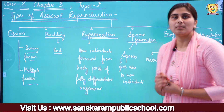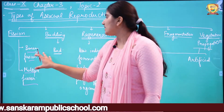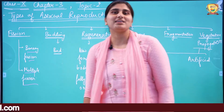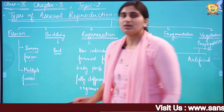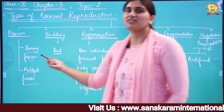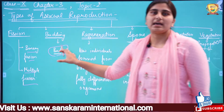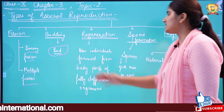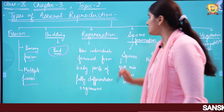The second type is Budding. In budding, the parent body has an outgrowth on its side — something grows outward, which we call a bud. Then slowly this bud will give rise to a new individual.